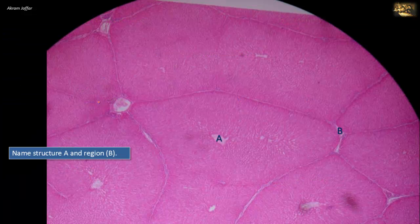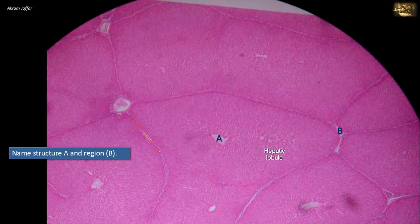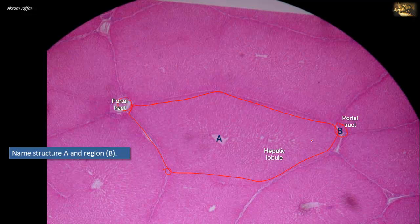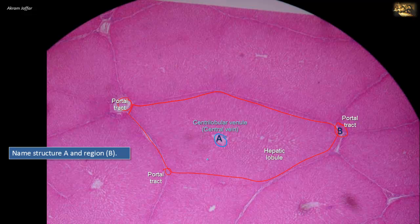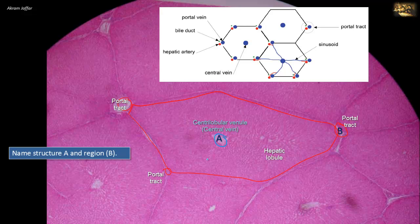Name structure A and region B. The section shows parts of the classical structural unit of the liver — the hepatic lobule — with its roughly hexagonal shape surrounded by connective tissue, and portal tracts at the corners. Region B represents a portal tract, while in the center of the hepatic lobule is a central vein, also called a centrilobular venule. The portal tracts at B contain three main structures: a branch of the hepatic artery, a branch of the portal vein, and a tributary of the bile ducts — hence the name portal triad.